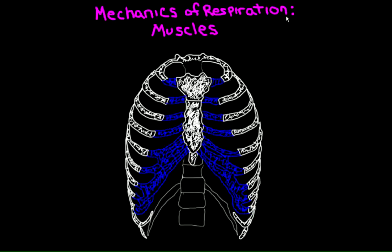In our last video, we discussed how the thoracic cage is capable of moving to expand and contract, increasing and decreasing the volume of the thoracic cavity — the space within the cage — which allows air to enter and exit the lungs. However, this bony structure can't move itself; it requires muscles, and it's these muscles and their function that we're going to talk about in this video.